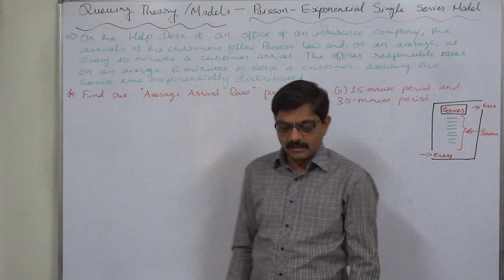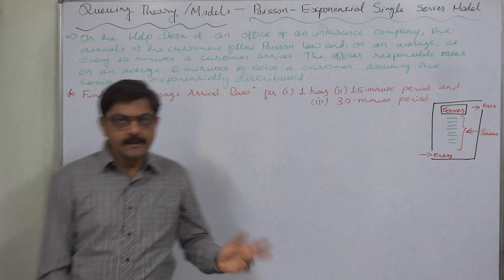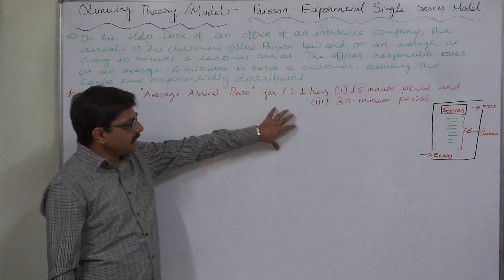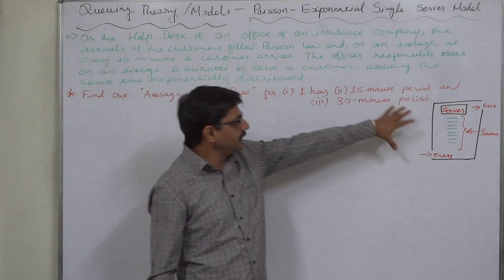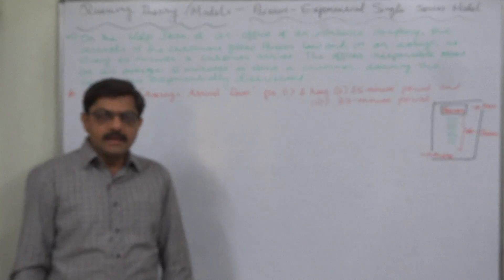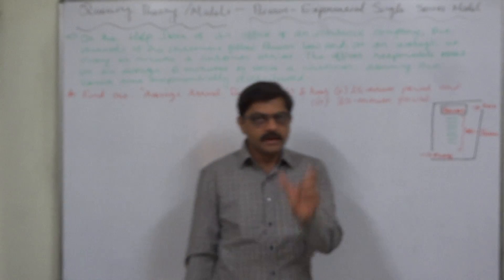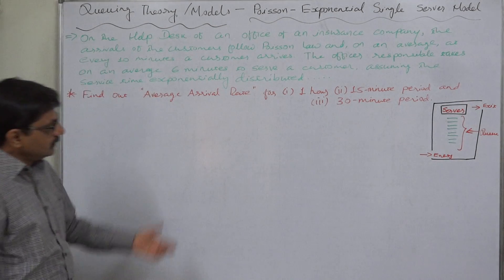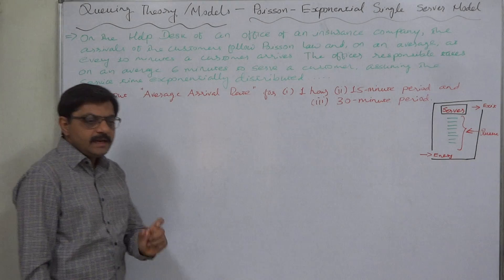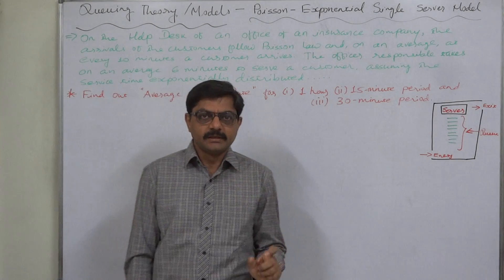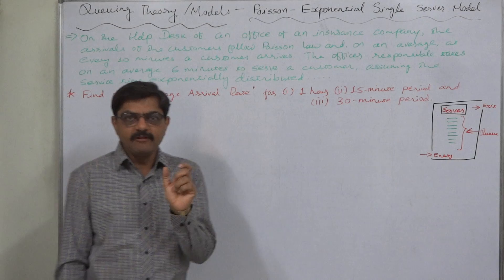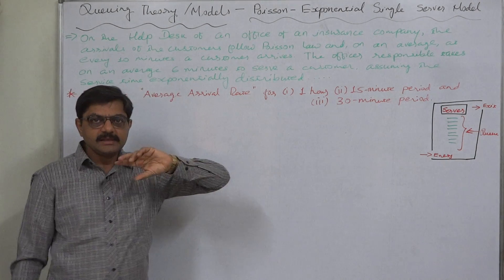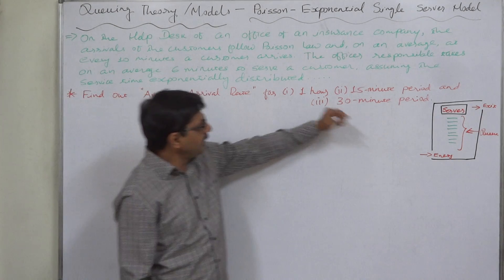In this lecture what we want to do is to find out average arrival rate for 1 hour, 15 minute period, and 30 minute period. We have discussed the concept of time unit T. To make calculations in queuing model we need a time unit, that means a time interval, specific time interval must be defined.